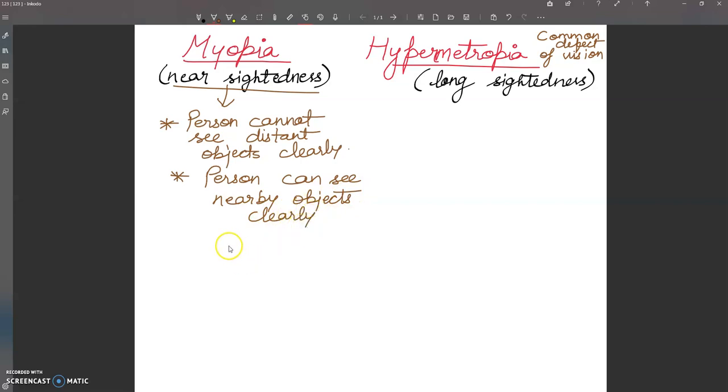Next, let's talk about what happens in myopia. In myopia, the eyeball is lengthened, or the lens is too curved or too convex.